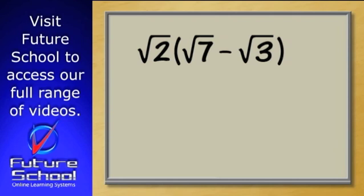Can you see what will happen when we have root 2 outside of root 7 minus root 3?